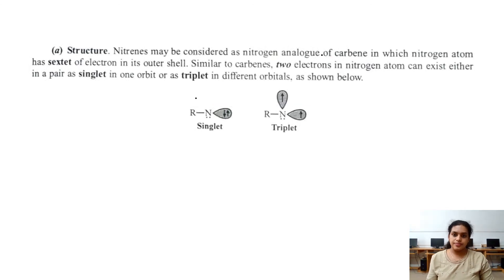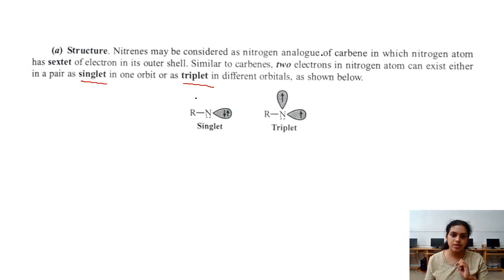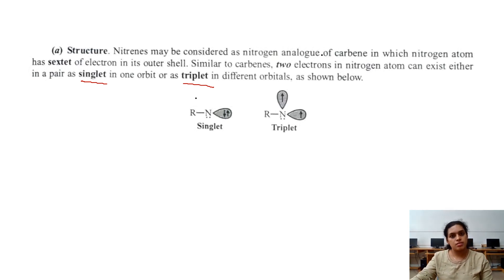Regarding the structure, like carbenes, nitrenes also have two variants: singlet and triplet. In both carbenes and nitrenes, in the singlet state the two electrons reside in one orbital in a paired condition. In the triplet state, the two electrons reside in different orbitals. This is the difference between singlet and triplet nitrenes. This concludes the discussion regarding carbenes and nitrenes.